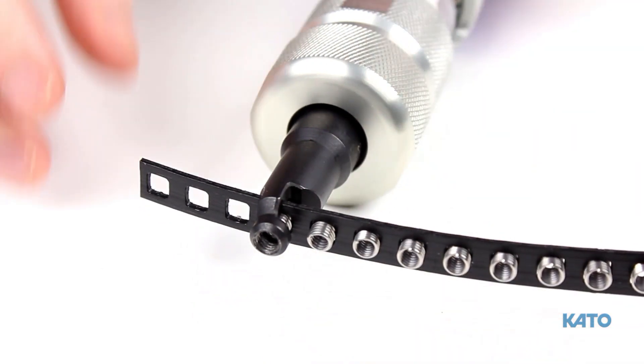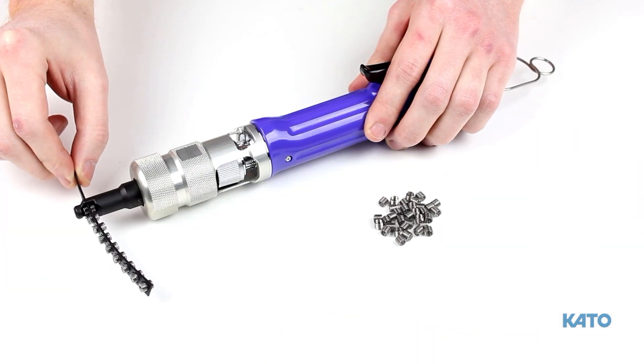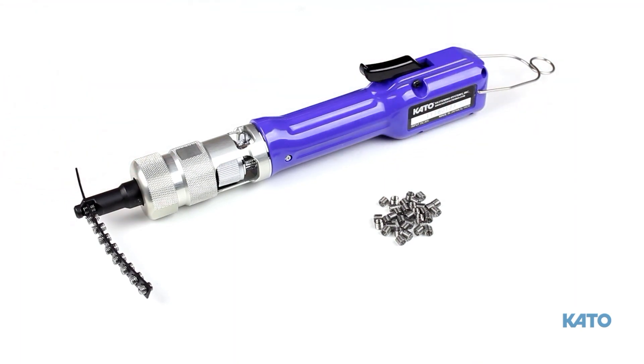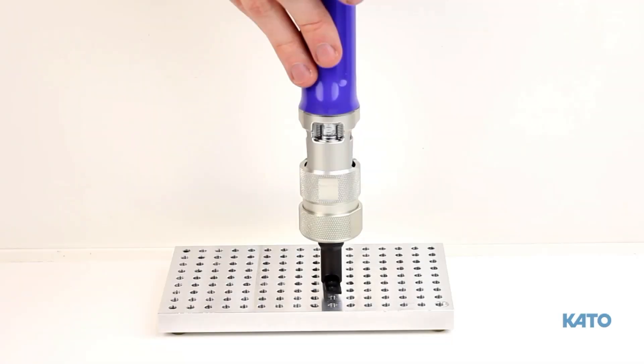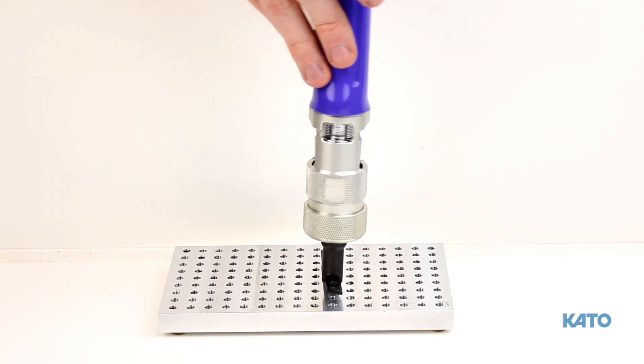Once the insert is in the well and the strip cannot be pulled through the slot any further, the insert is lined up with the mandrel and ready to be installed. Hold the tool perpendicular to the hole so that it is straight. Avoid holding it at an angle. This can cause the installation to fail and may damage the installation tool.